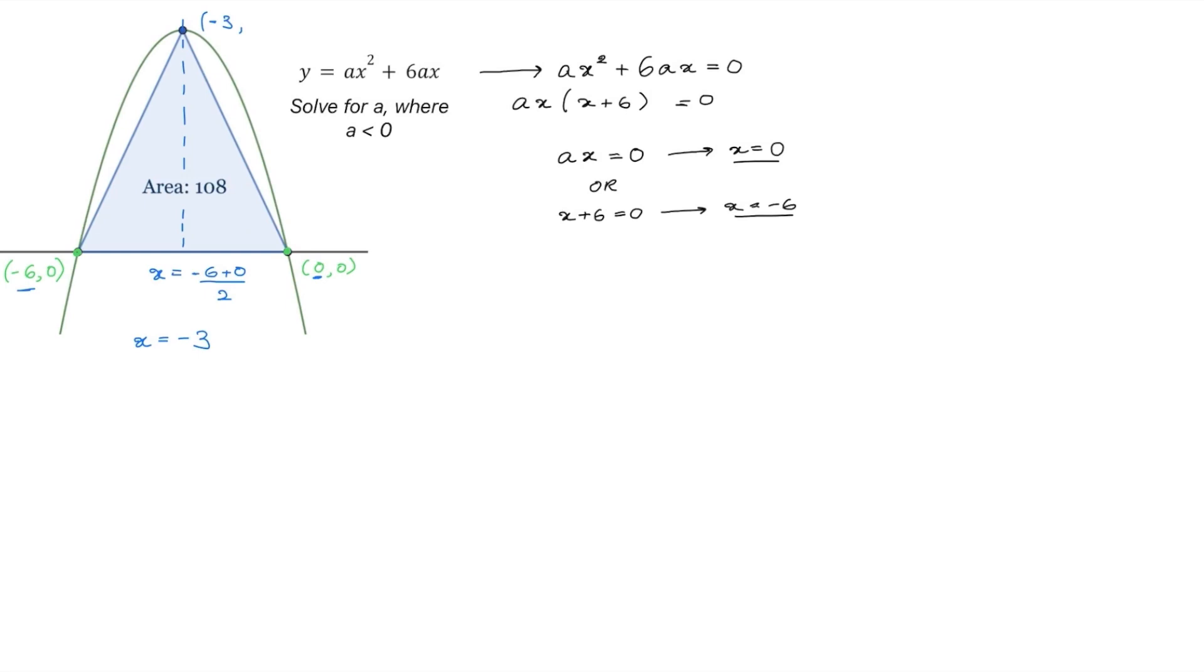And what about the y coordinate? Well, let's see what we've got. Here we have a triangle, and its height is equivalent to the y coordinate of our vertex over here. So let's call that y. This triangle also happens to have a base from one root to the other root, and this base has a length of 6.